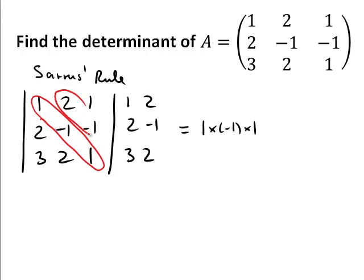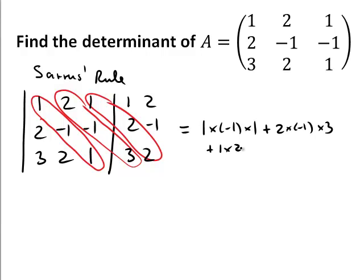I will then do the same for the next diagonal here. So, I will get plus, I will add this up, 2 times negative 1 times 3, and I will do the same for the last diagonal, which is this one here. So, I will get plus 1 times 2 times 2.